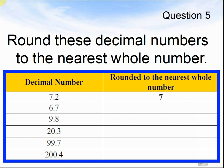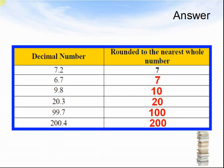Let's look at the next question. Question 5. Round these decimal numbers to the nearest whole number. For example, 7.2 rounded to the nearest whole number is 7. The answers were: 7.2 goes to 7, 6.7 goes to 7, 9.8 goes to 10, 20.3 goes to 20, 99.7 goes to 100, 200.4 goes to 200.